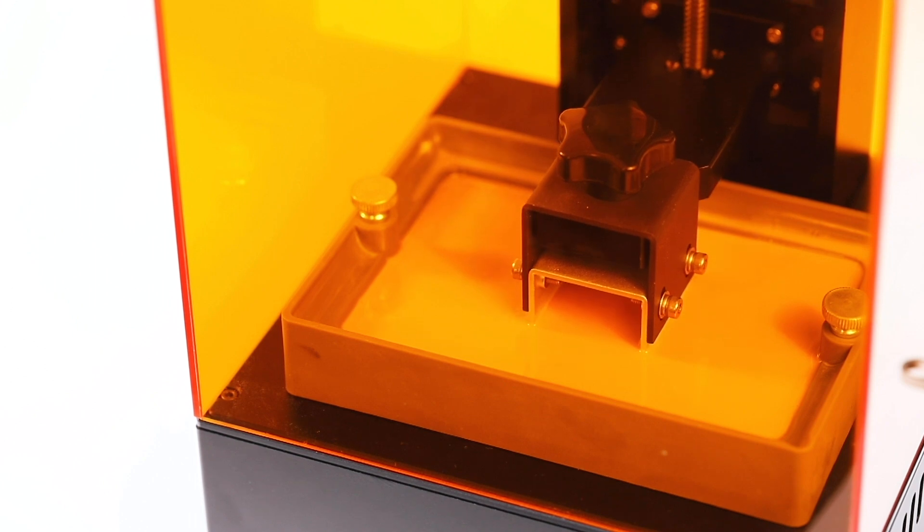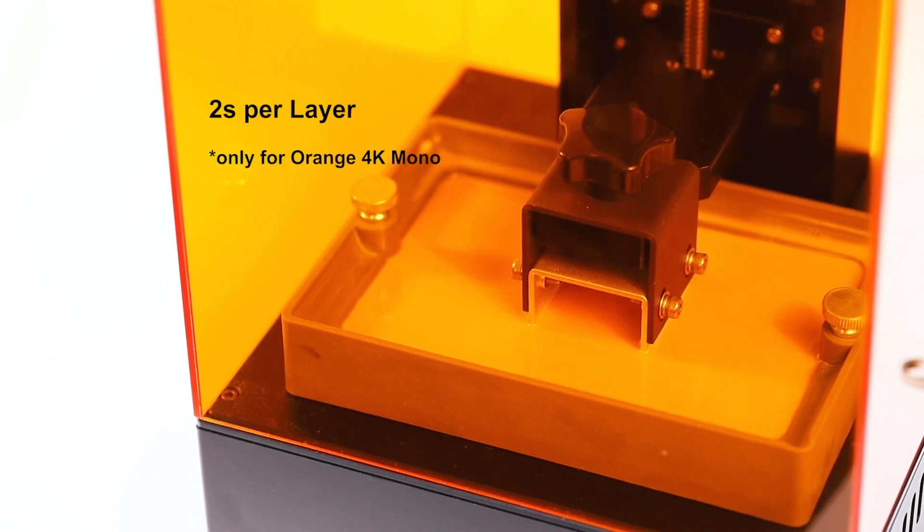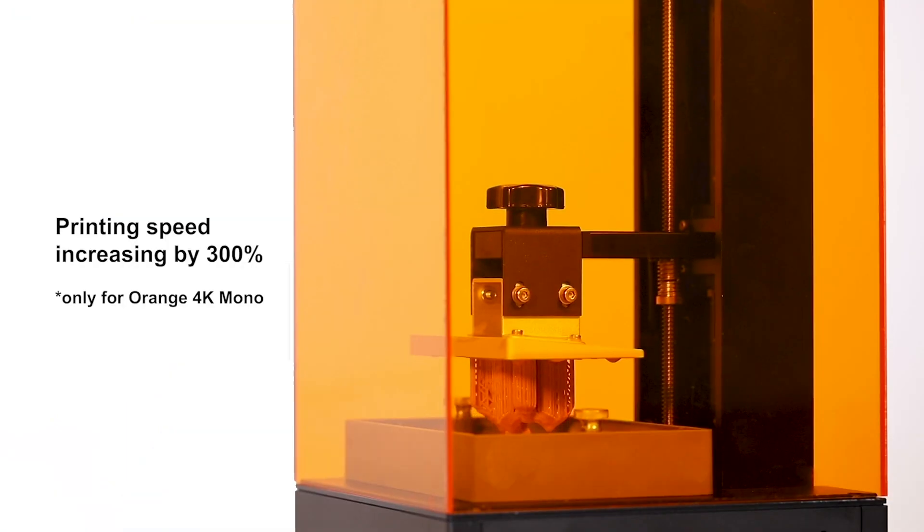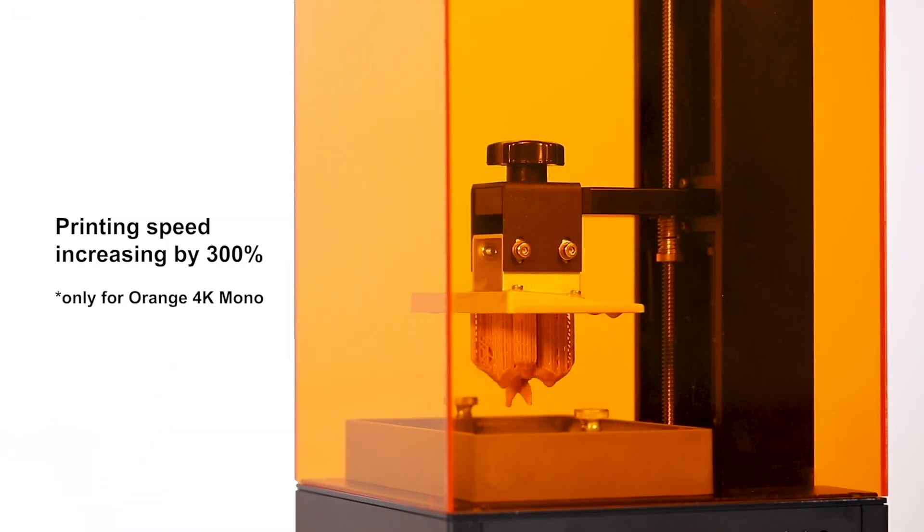With parallel UV LED design, the printing speed is up to 2 seconds per layer when configured with the mono screen. The speed is increased by 3.7 times.